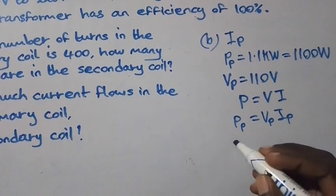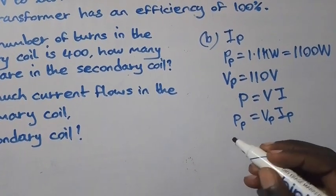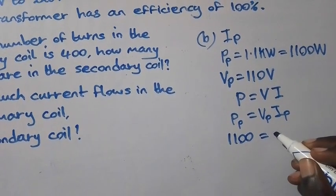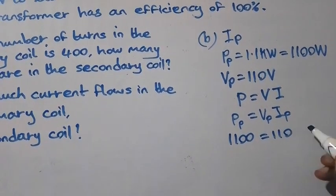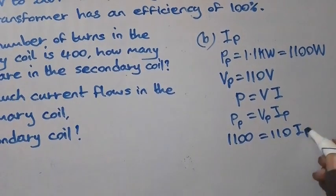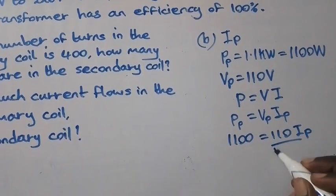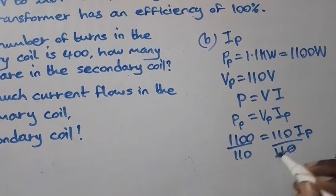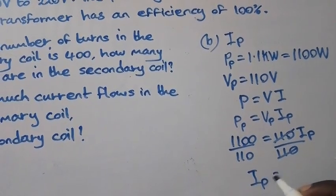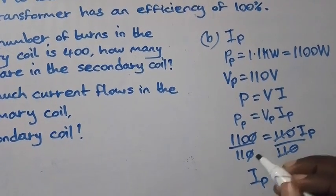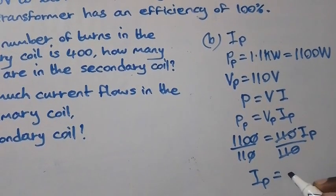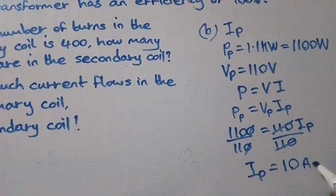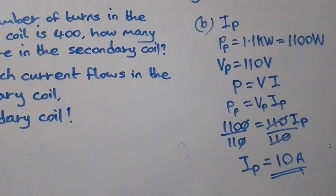Where PP is, we are going to put 1100. 1100 equals VP which is 110 times IP, our subject. So we divide both sides by 110. IP equals 11 into 11, which is 1, plus this is 0, so it will be 10. 10 amps is the current.